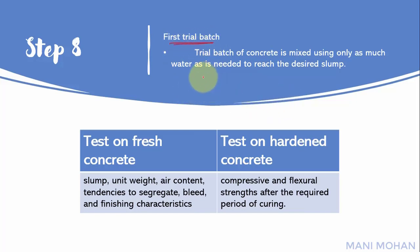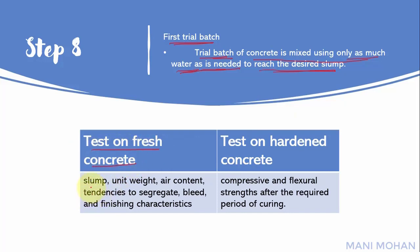Step 8: First trial batch — using the proportions developed in the preceding steps, a trial batch of concrete is mixed using only as much water as is needed to reach the desired slump, but not exceeding the permissible water-cement ratio. The fresh concrete should be tested for slump, unit weight, air content, its tendency to segregate, bleed, and finishing characteristics.